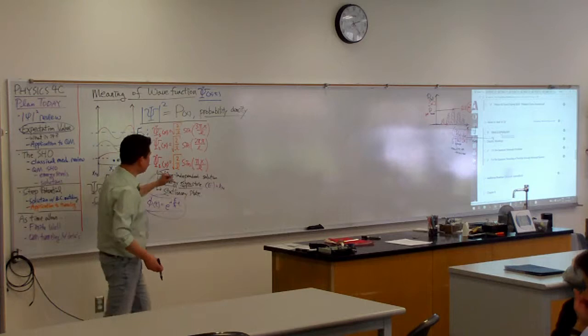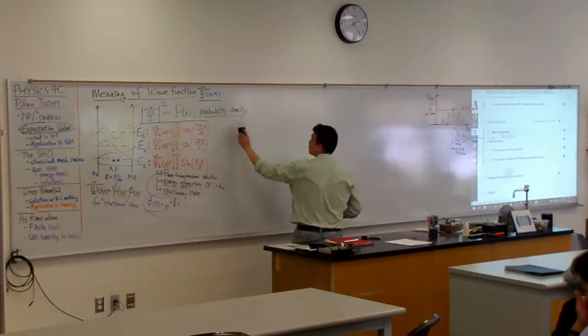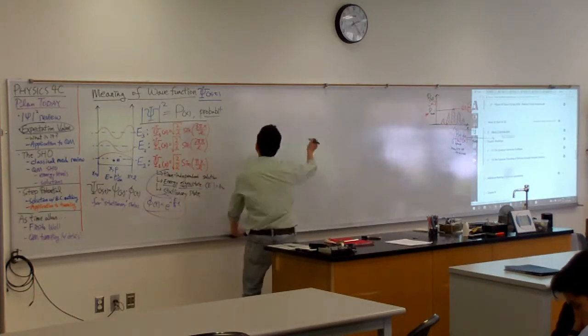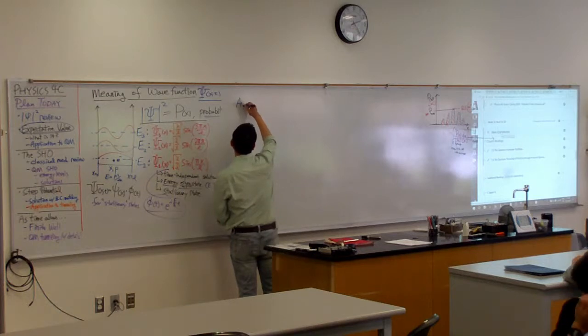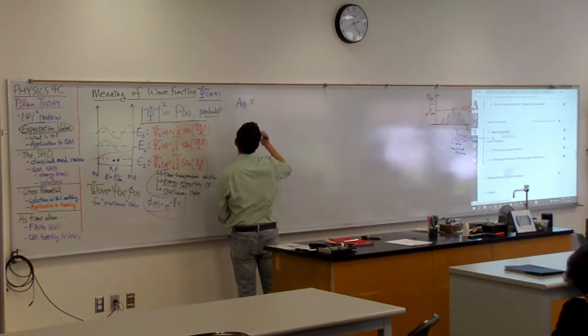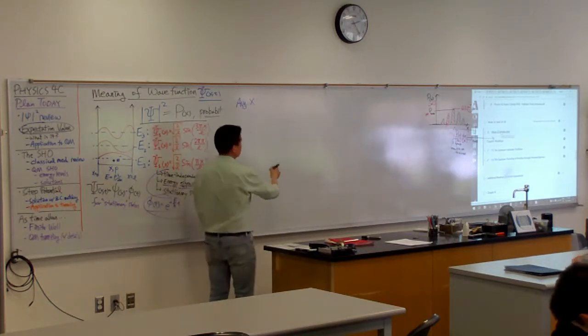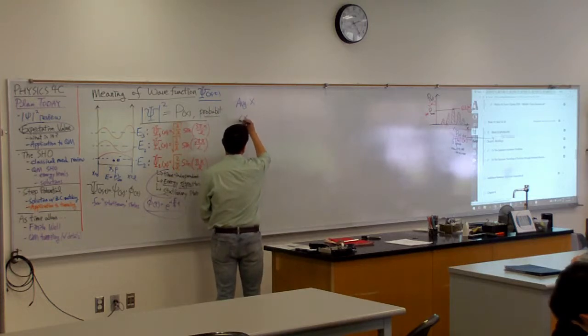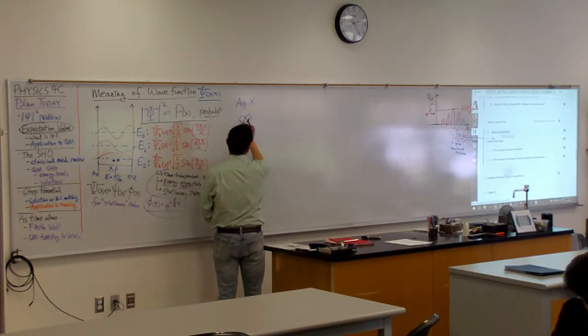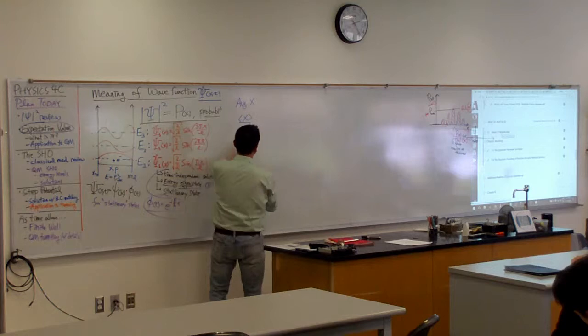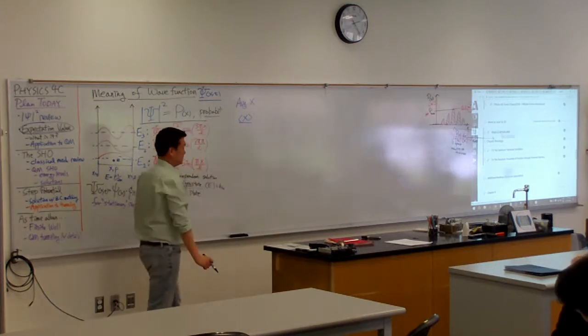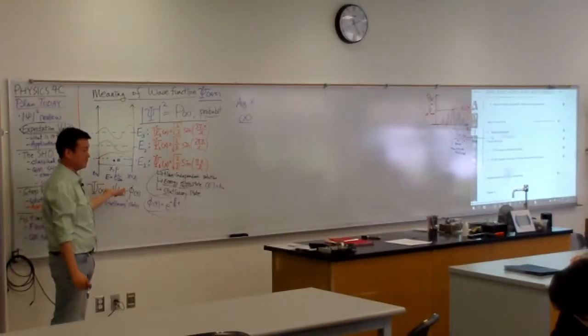For this electron, when I calculate the average x value, or I'm going to use this symbol to denote it, x inside the angle bracket. When I calculate this, what do you expect it to be? Pardon the pun.